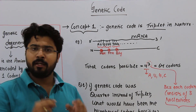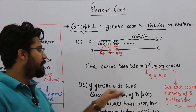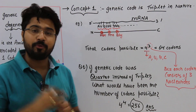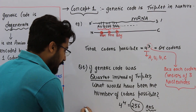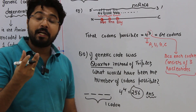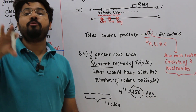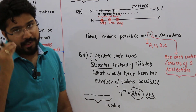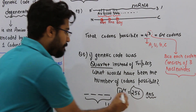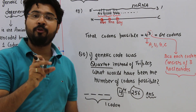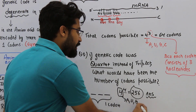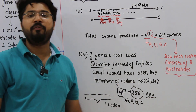Now, a question can be asked: suppose the genetic code was quartet instead of triplet — that is, one codon is made up of a 4-letter code. If your genetic code is quartet, how many total codons are possible? The base will always remain 4, since there are 4 nucleotides: A, U, G, C. Only the power has to change, because 4 nucleotides now constitute one codon. So it becomes 4 raised to the power 4, which is 256 codons. That is the final answer.